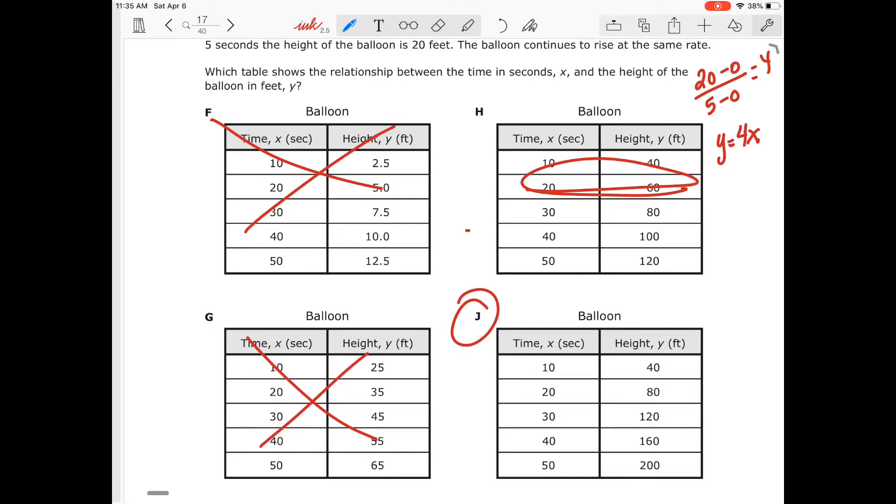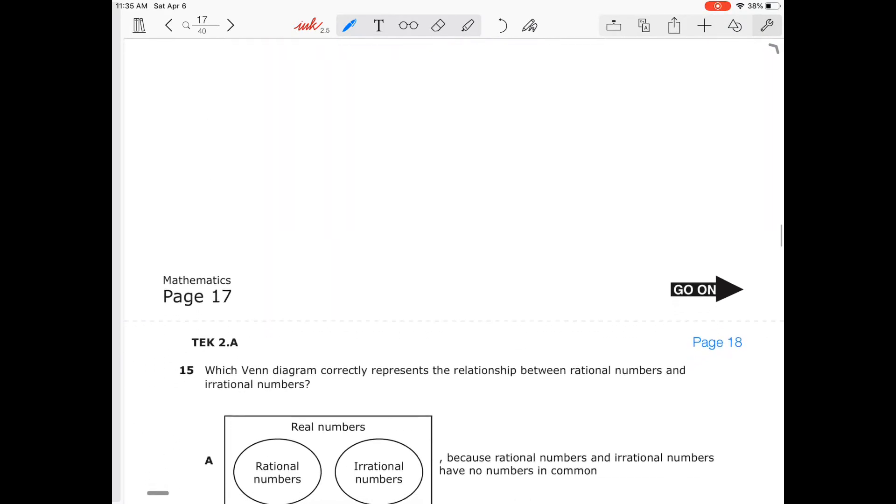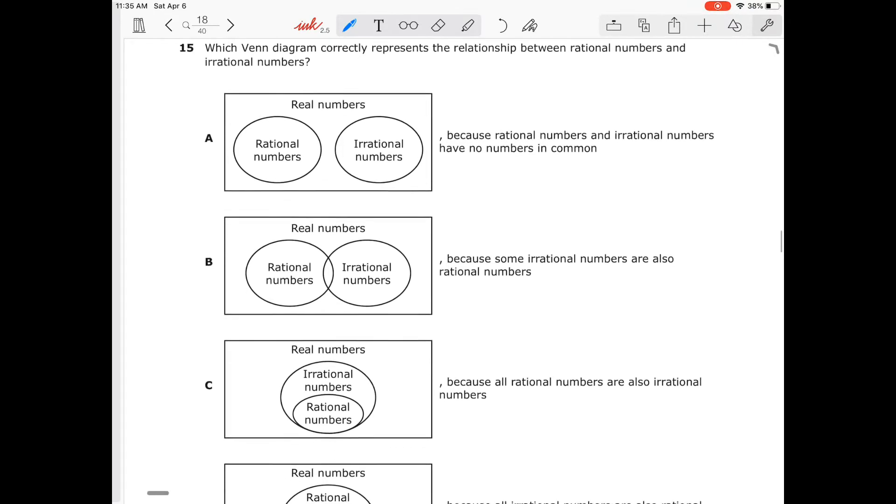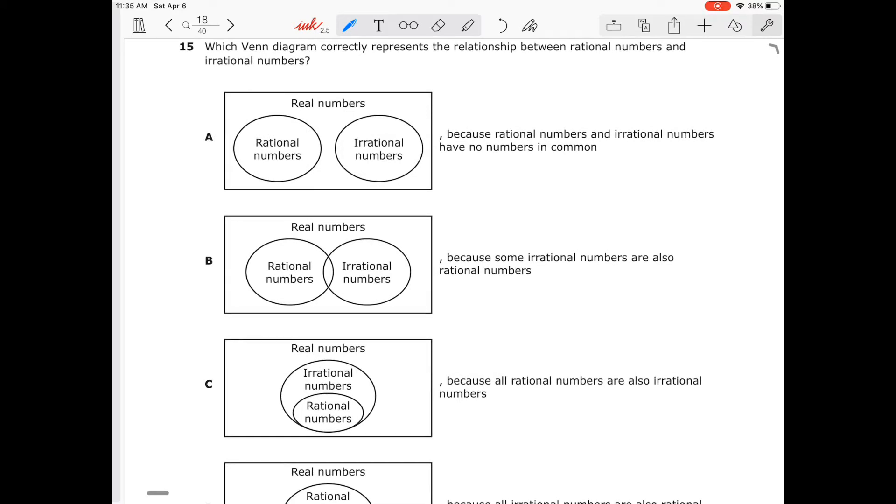Really that easy, pretty simple, straightforward. Number 15, which Venn diagram correctly represents the relationship between rational and irrational numbers? We're going to pick the right answer.